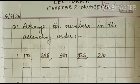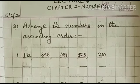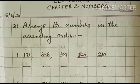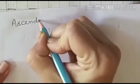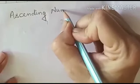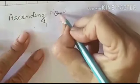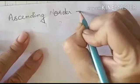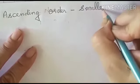Now, the question number 1 is: arrange the numbers in the ascending order. Children, what is the ascending order? Ascending order means smaller to bigger.